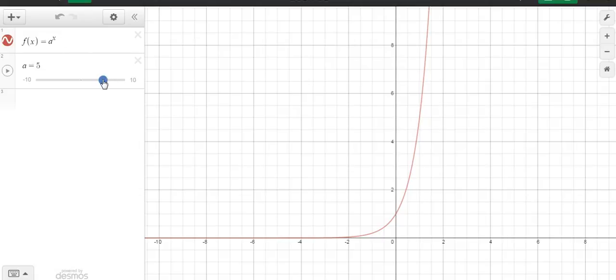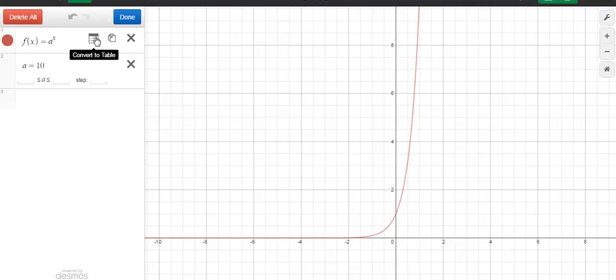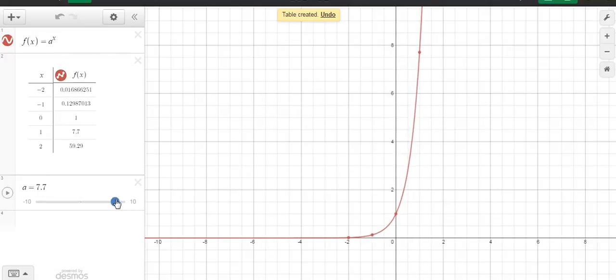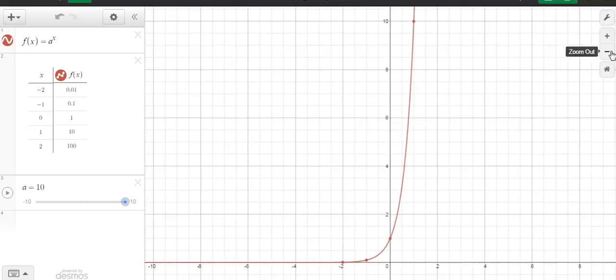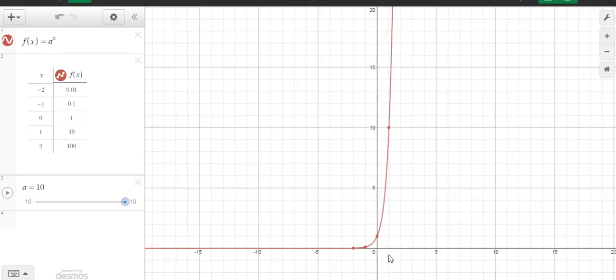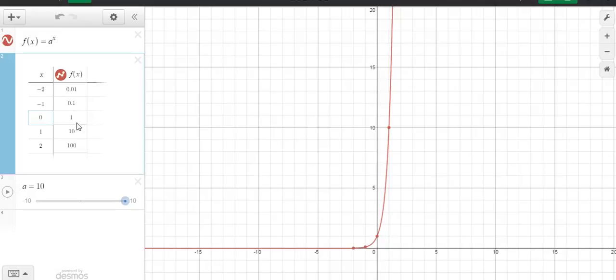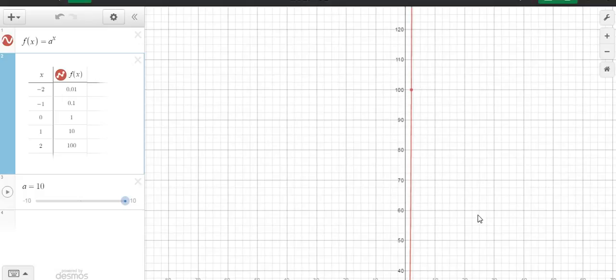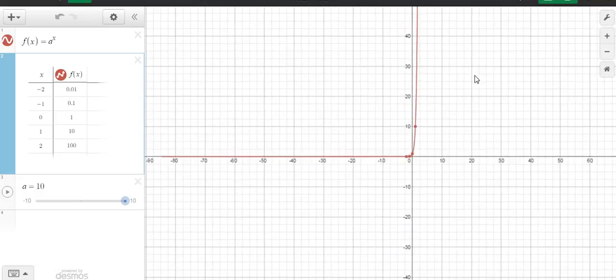What I want to do is see what happens when a is 10. I'm going to create a little table here so we can see what that looks like. Let's put it at 10, and we can see some of these core values: we have (0, 1), we have (1, 10), and then we have (2, 100). I'm going to zoom out a little bit more just to see that.